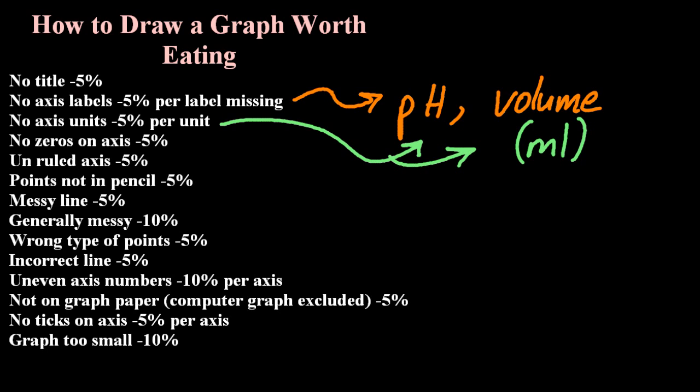Now I'm fussy - I like to see zeros on my axis because that's how we do it in Britain. But that's not really that important, it seems, in the IB.